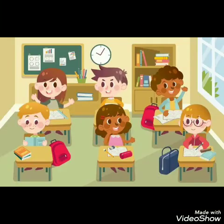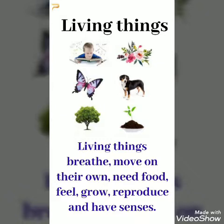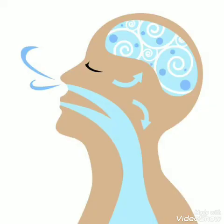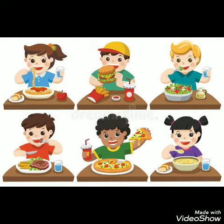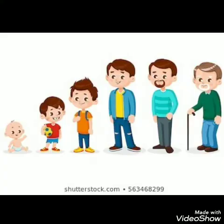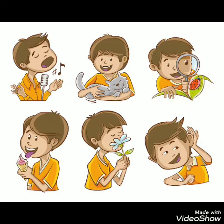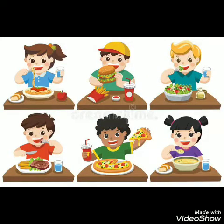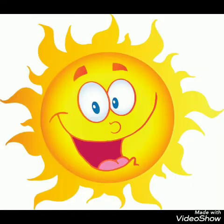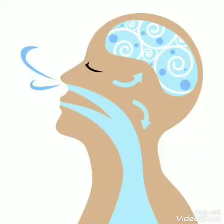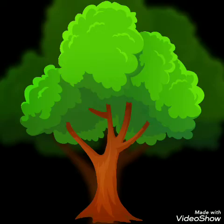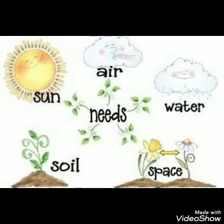Now we are going to see today's topic: Living Things. Living things breathe, move on their own, need food, feel, grow, reproduce and have senses. Most living things need food, water, light, temperatures within defined limits, and oxygen. Plants are living things and they need air, nutrients, water and sunlight.